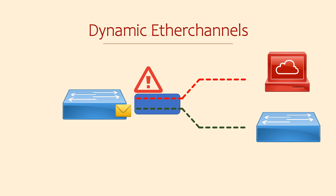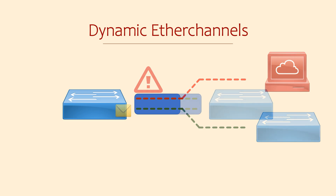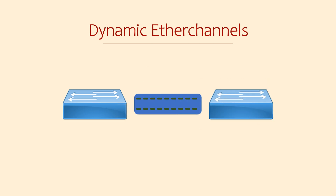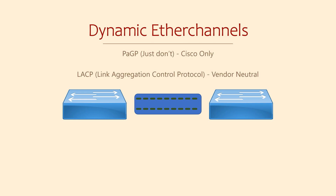I recommend dynamic wherever it's supported. Cisco supports two types of dynamic EtherChannel — two different protocols we can use to exchange messages. These are called LACP and PAGP. PAGP is an old Cisco-only protocol. It's rarely used anymore, so we're not going to look at it in any detail. Instead, we're going to focus on LACP.